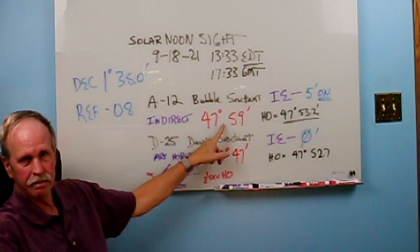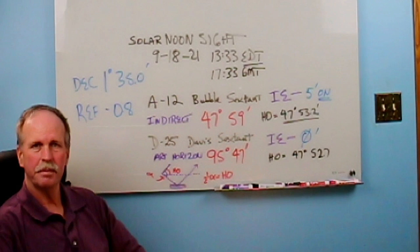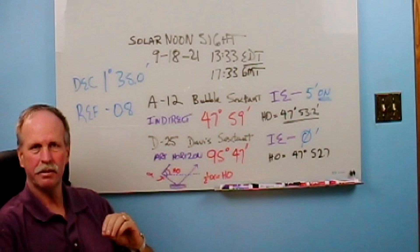And here are the readings that I got. On the bubble sextant, I got 47 degrees 59 minutes, and on the Davis sextant, I got 95 degrees 47 minutes. So let's cue up the music and see how I got these numbers, and then what I'm going to do with them to find my location. And then at the end, we'll have a little contest.